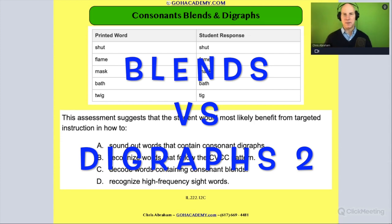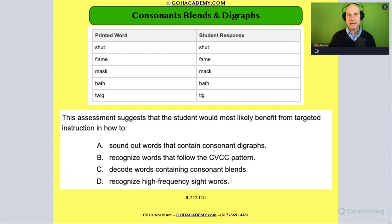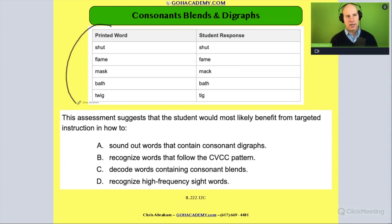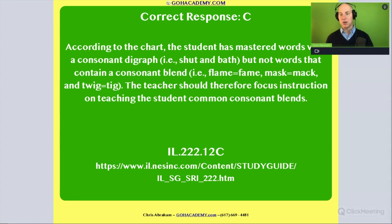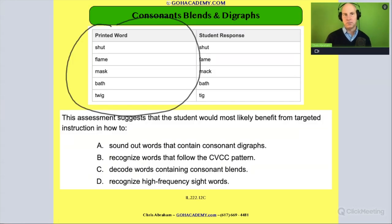All right team, let's take a look at this problem. We're going to use our knowledge of consonant blends and consonant diagraphs to analyze a student's response. There's a printed word and the student is decoding it, so we're seeing how they decode it. There are going to be some mistakes in the student's response, so it's our job to figure out where the student went wrong.